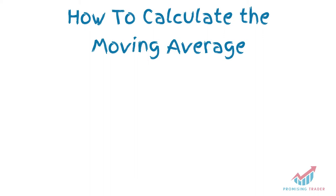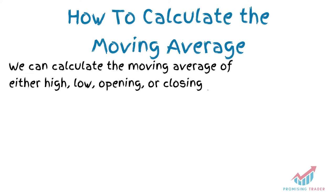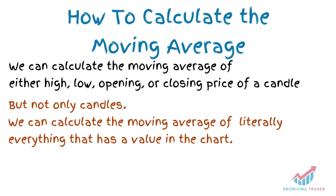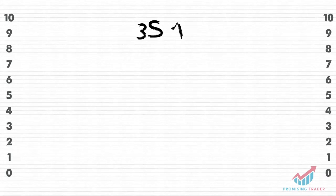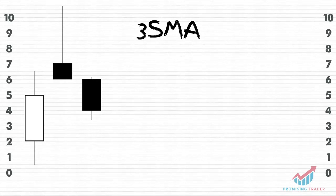As I was explaining before, we can calculate the moving average of the opening price, the closing price, the high, or the low of each candle. Usually we go with the closing price. The formula is very simple. Let's pretend that we want to calculate a 3-period Simple Moving Average, also known as SMA. We need to collect the 3 previous closing prices, which in this example would be $5, $6, and $4. The average is simply calculated by making the sum of these 3 values and then dividing by 3 — basically the classical arithmetic average. So: 5 plus 6 plus 4 equals 15, divided by 3, equals 5, which is the moving average of these previous 3 candles.